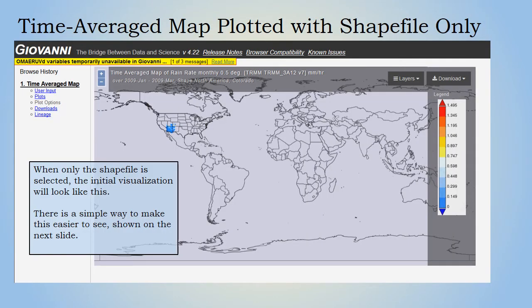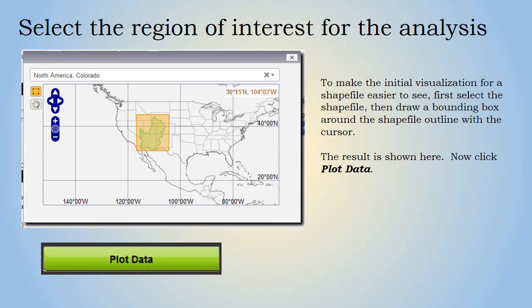When a shapefile is selected by itself, the initial visualization in the browser will show the full extent, but the output map download will only be for the selected region. To make the shapefile easier to see and manipulate, select the shapefile and then draw a bounding box around it using the click and drag method. The result of this procedure is shown on screen. Then click Plot Data to get a map.